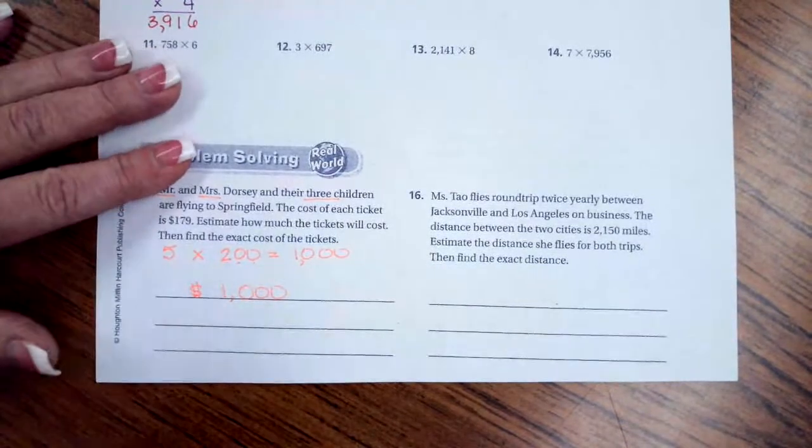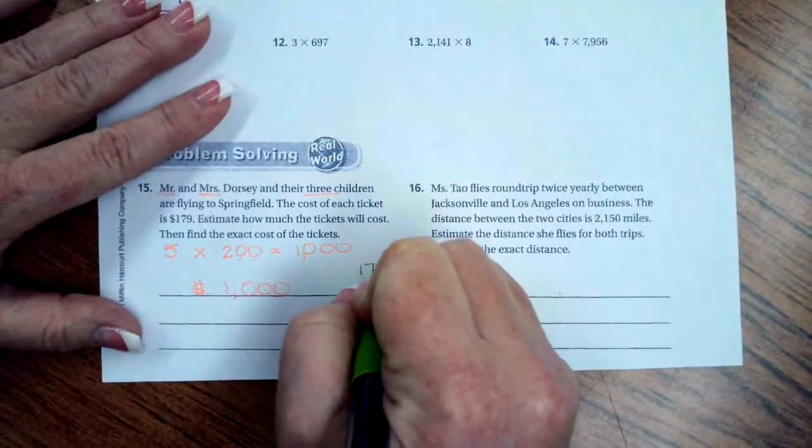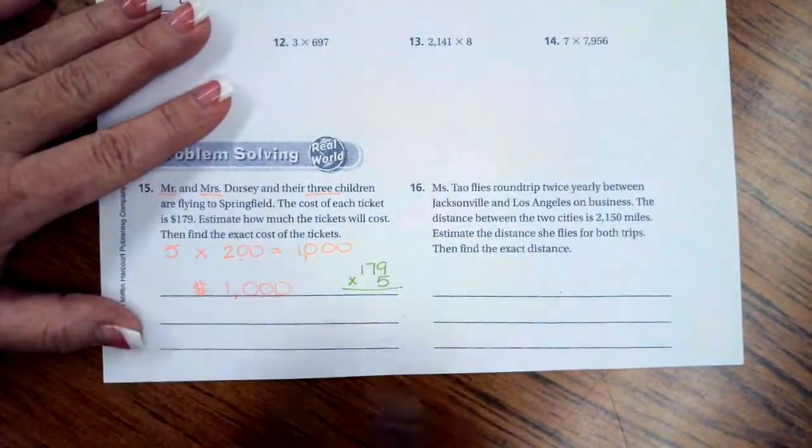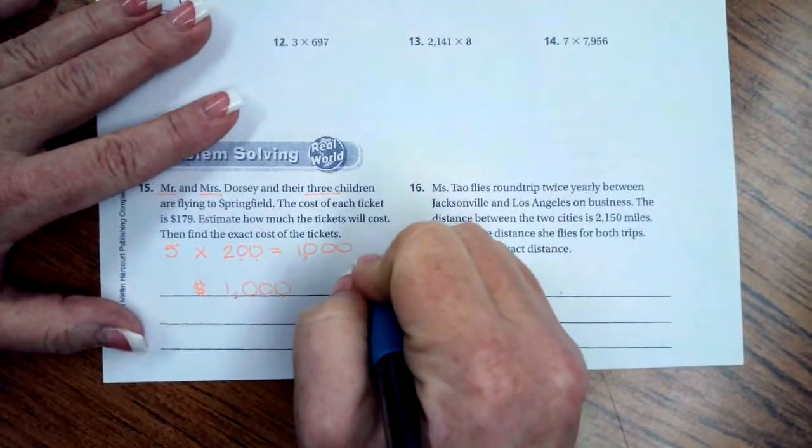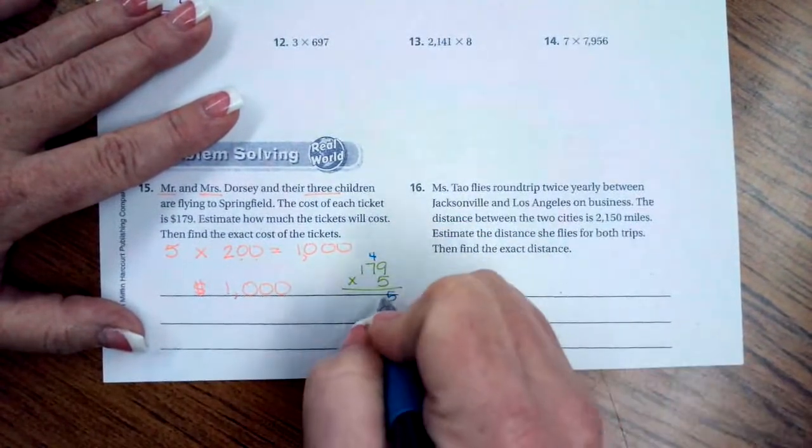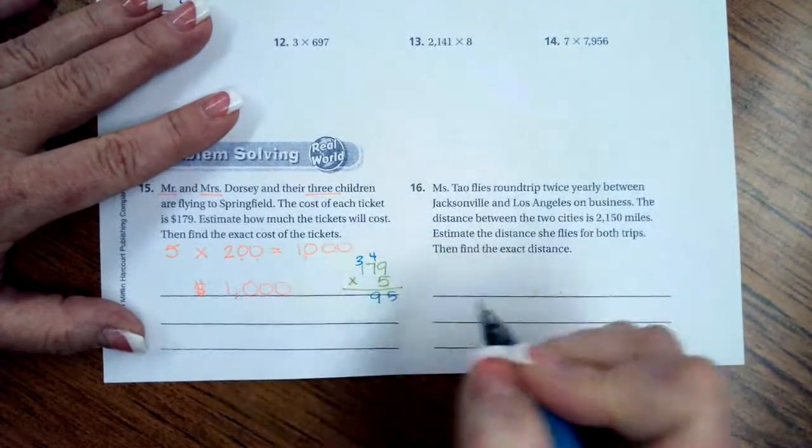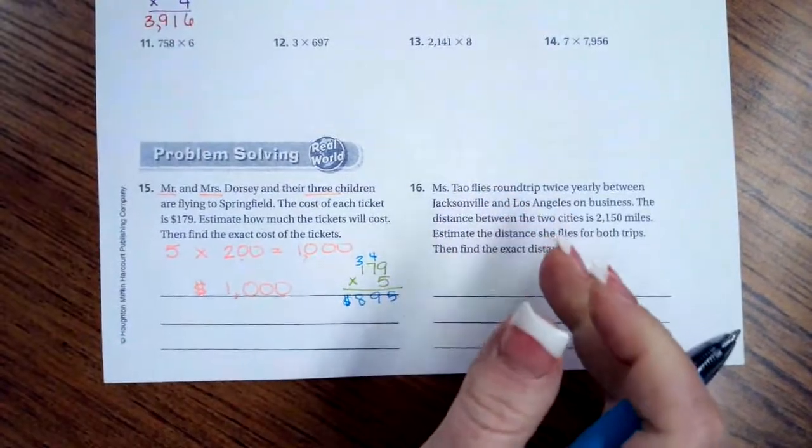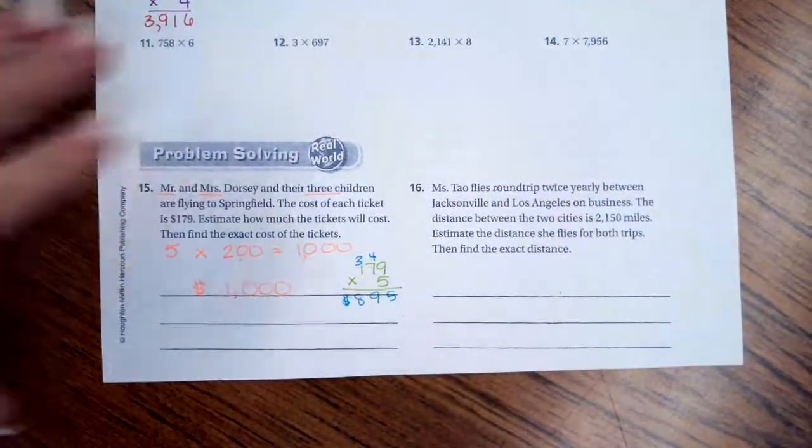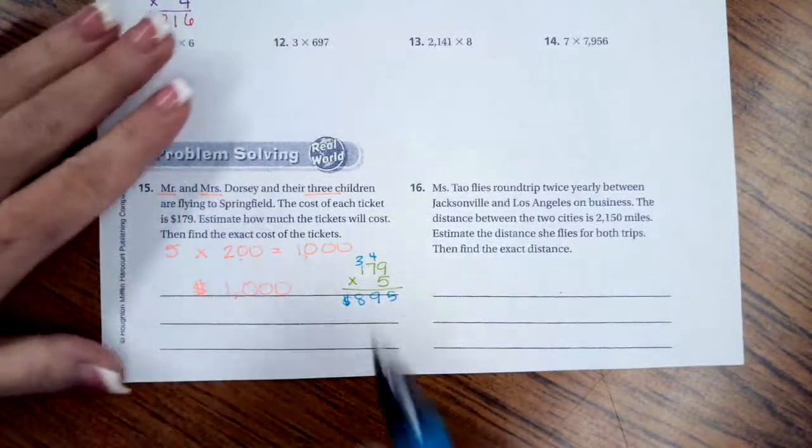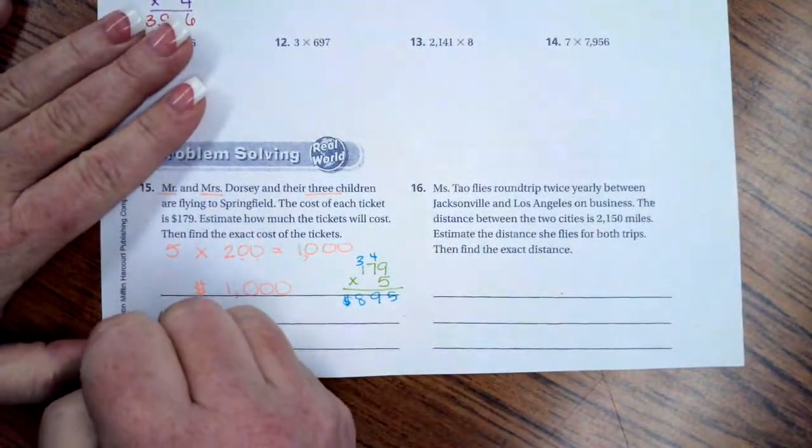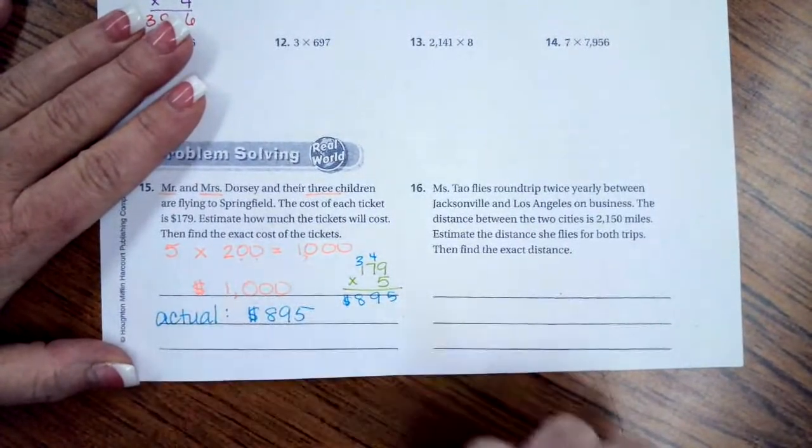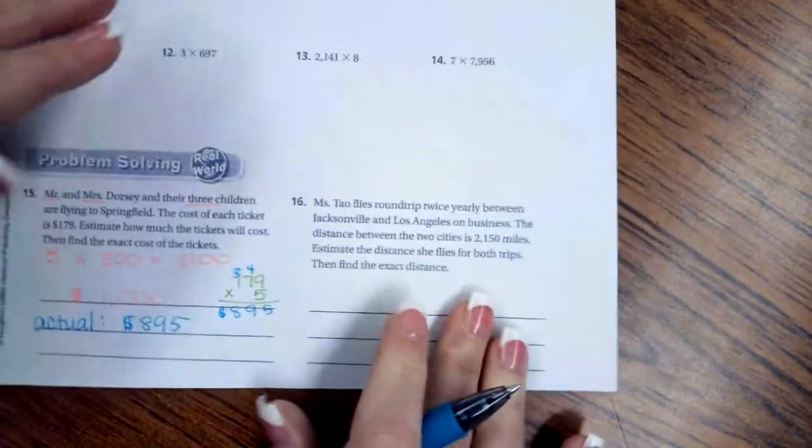Now we're going to do the exact cost of that. So we're going to do 179 times 5. Five times nine is forty-five. Five times seven is thirty-five plus four is thirty-nine. Five times one is five plus three is eight. So the actual cost is 895 dollars.